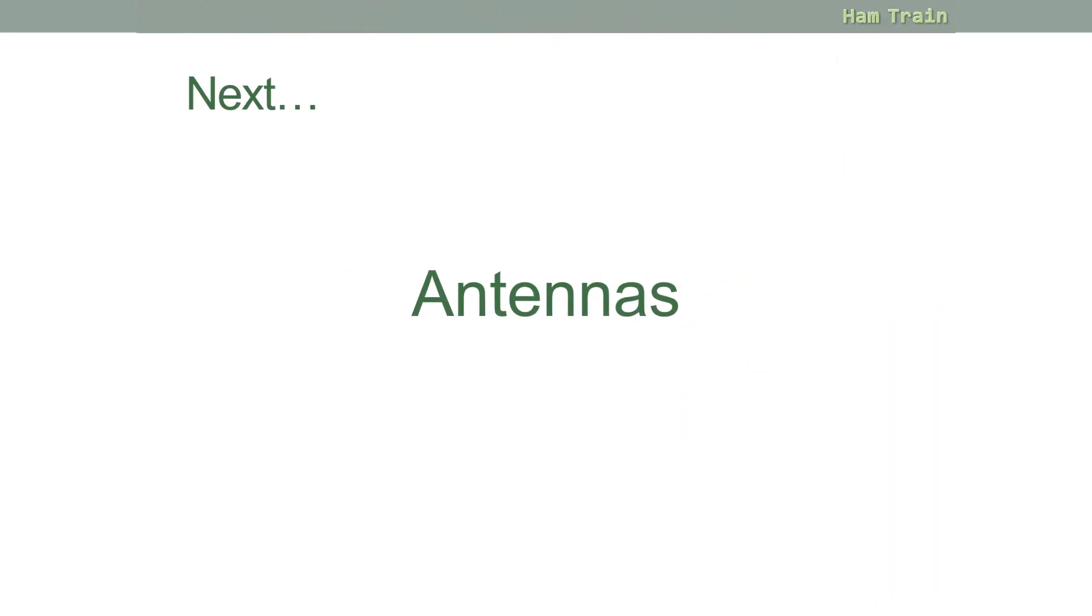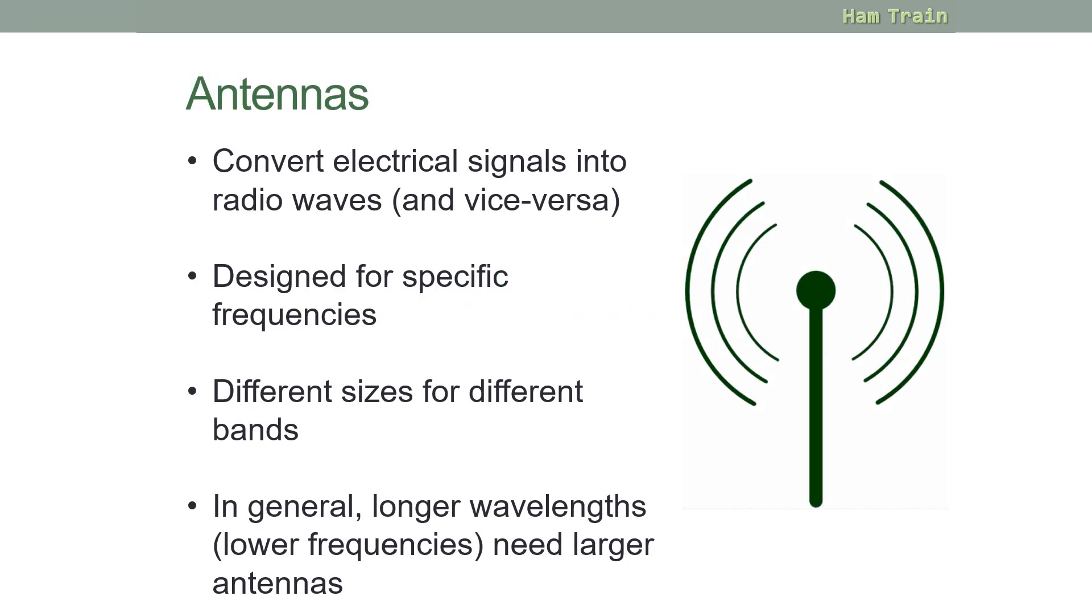Now let's move on to the various types of amateur radio antennas. What does an antenna do? It converts the electrical signals into radio waves and vice versa. Each antenna is designed for a specific frequency. And there are different sizes of antenna for the various different frequencies and bands. In general, longer wavelengths, i.e. lower frequencies, will need a larger antenna.